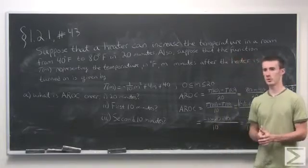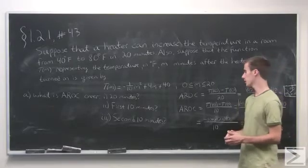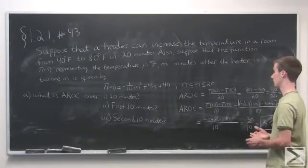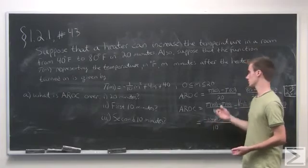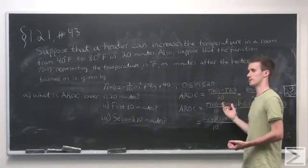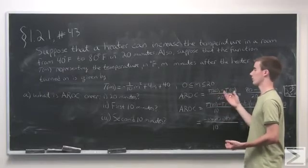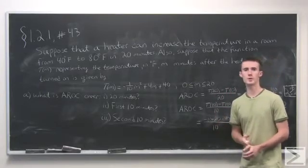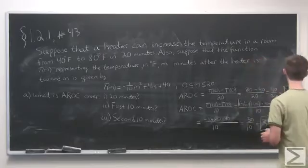Part 3 is so similar that I'll let you do that. It's the same thing, but the time interval is 10 to 20, so the average rate of change is T(20) minus T(10), over the change in time.